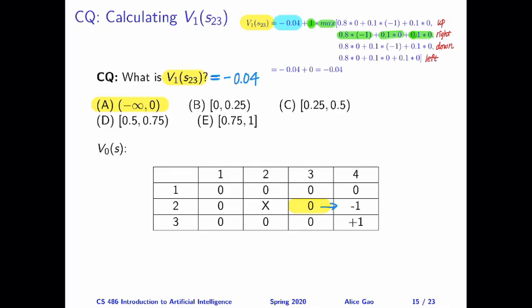Now let's look at the action of moving to the left. If we're going left, with 80% chance we'll bump into the wall and come back — that's why we have 80% multiplied by zero. Then with 10% chance we go up, which is zero, and with 10% chance we go down, which is also zero. So everything is zero.